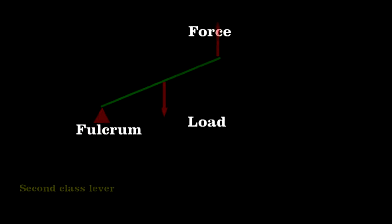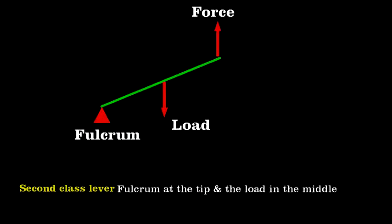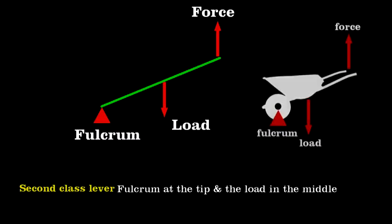Recall that the arrangement of three components, the fulcrum, the force, and the load, determines the class of a lever. A second class lever pulls on the load in its middle, with a fulcrum in force at each end. An everyday example is a wheelbarrow.